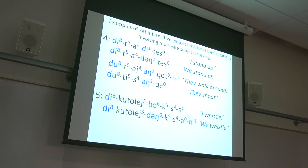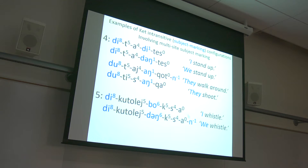Here are examples of the various conjugations of intransitive verbs. Sometimes you have near synonyms, like 'make a round trip to a river,' belonging to different conjugations: conjugation one, conjugation four, and conjugation three. You cannot predict how the verbs will conjugate from the meaning alone — it must actually be part of the lexical entry of the verb.